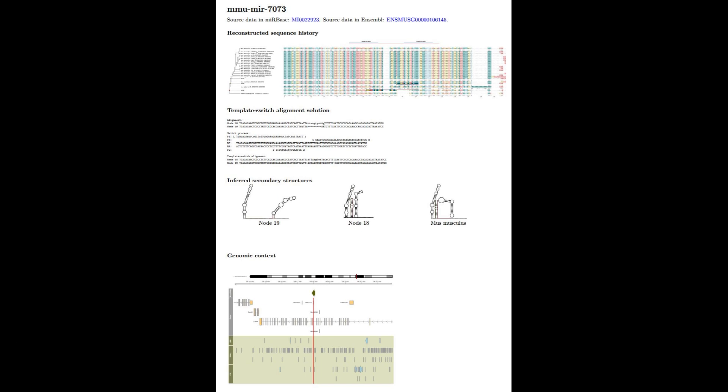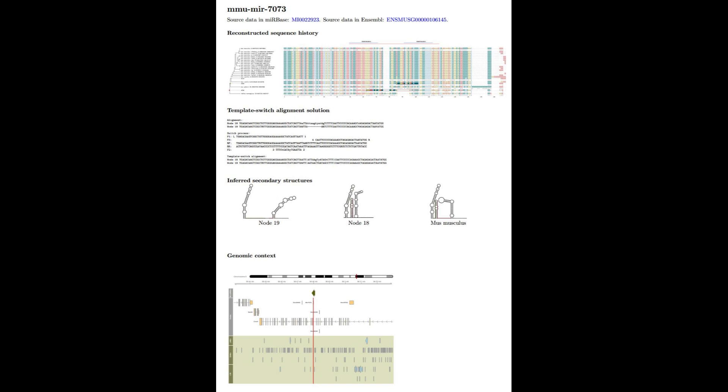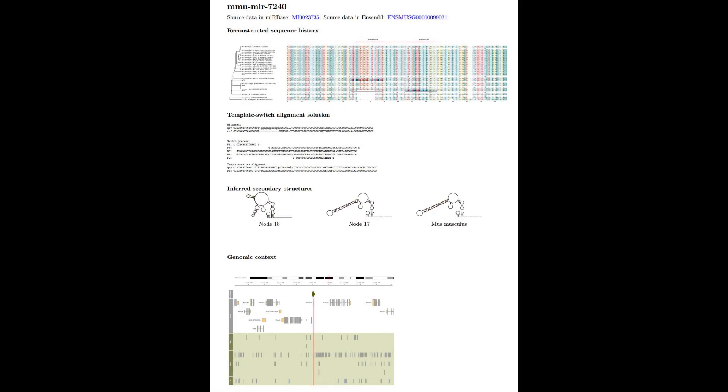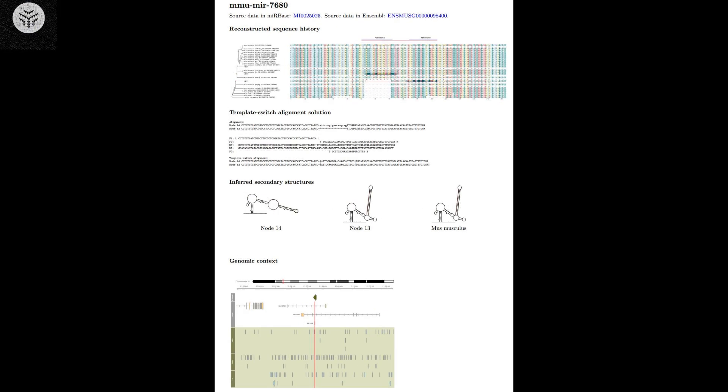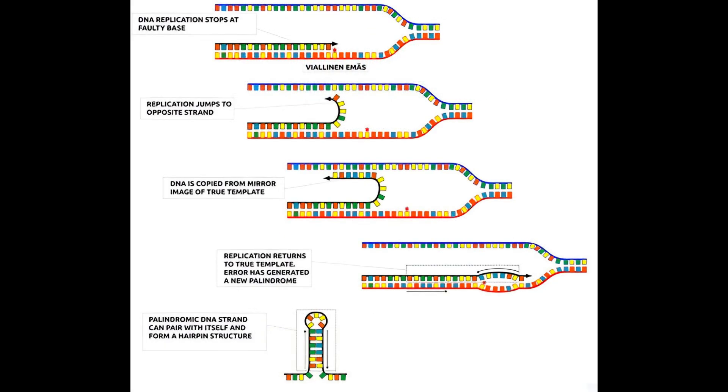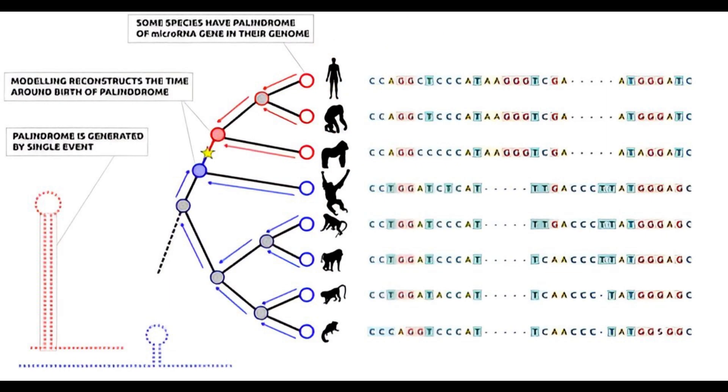Through a detailed study, it has been determined that under specific conditions, these DNA palindromes have the ability to develop into microRNA genes. Scientists have long been captivated by the emergence of new genes, a phenomenon that mirrors the birth of biological life itself. Although the number of genes in the human genome remains fairly consistent at around 20,000, there are thousands of regulatory genes.